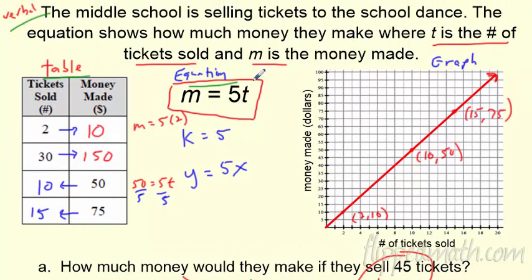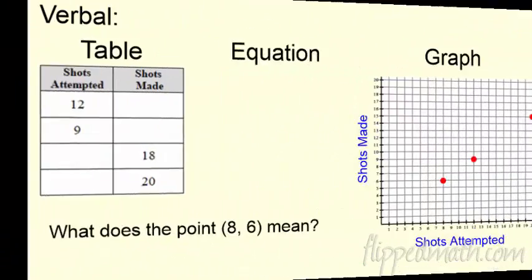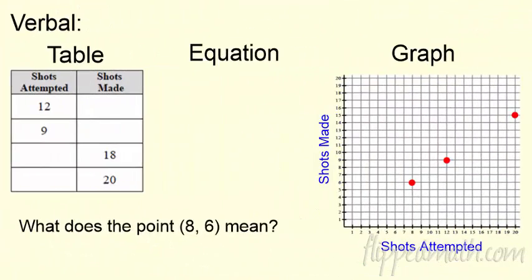That's it. We have a verbal. We have a table. We have an equation. We have a graph. That is this whole section. Let's keep the fun rolling. Will I always give you a verbal? No. In this case, I'm giving you the graph. So I'm going to tell you this is proportional.